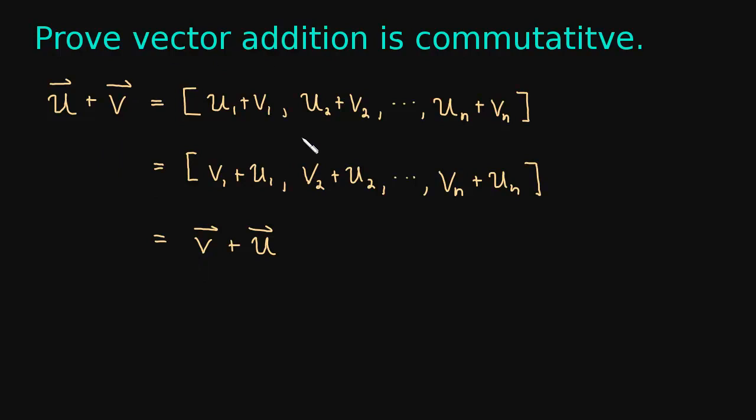And so we just proved in just a couple of steps that u plus v is equal to v plus u. The only real fact that we had to remember was that the addition for real numbers is commutative.